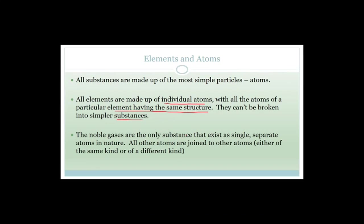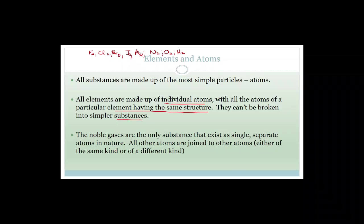The noble gases are the only substances that exist as single separate atoms in nature. For example, your group seven elements like to be diatomic — they like to be in nature as a pair. So you've got fluorine, chlorine, bromine, iodine, and astatine. But they aren't the only ones — there's nitrogen, oxygen, and hydrogen, which also like to be in nature as a pair. The noble gases are the only substances that exist as single separate atoms because all other atoms are joined to other atoms, either of the same kind or of a different kind.